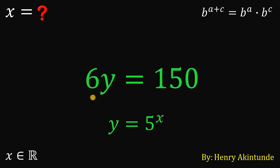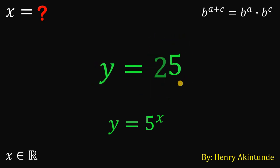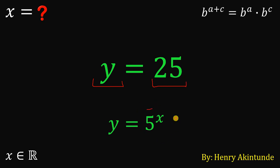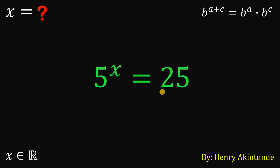Now let's solve for the value of y — we divide both sides by 6. 150 divided by 6 gives us 25, so y equals 25. We also know that we set y as 5 raised to the power of x. Therefore, we can replace y back with 5 raised to the power of x, giving us 5 raised to x equals 25.